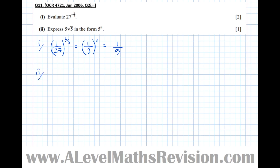Part two: express 5√5 in the form 5 to the power of n. Write each part in index form: 5 is 5 to the power of 1, and the square root of 5 is 5 to the power of one-half — because the bottom of the fraction is the root (square root) and the top is the power of 1. So 5¹ × 5^(½): add the powers, 1 plus a half gives 5 to the power of one and a half, which at A-level we prefer to write as the improper fraction 5 to the power of three-halves.